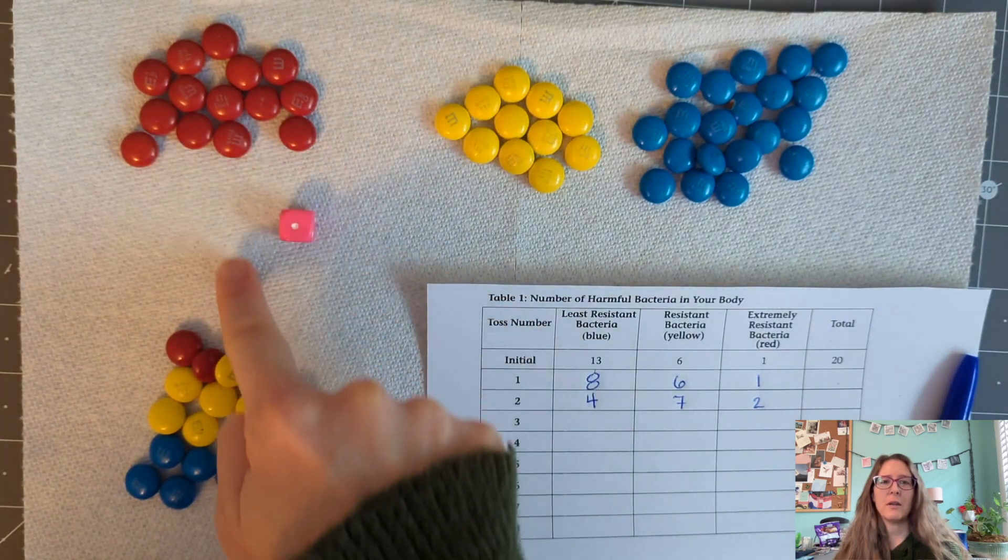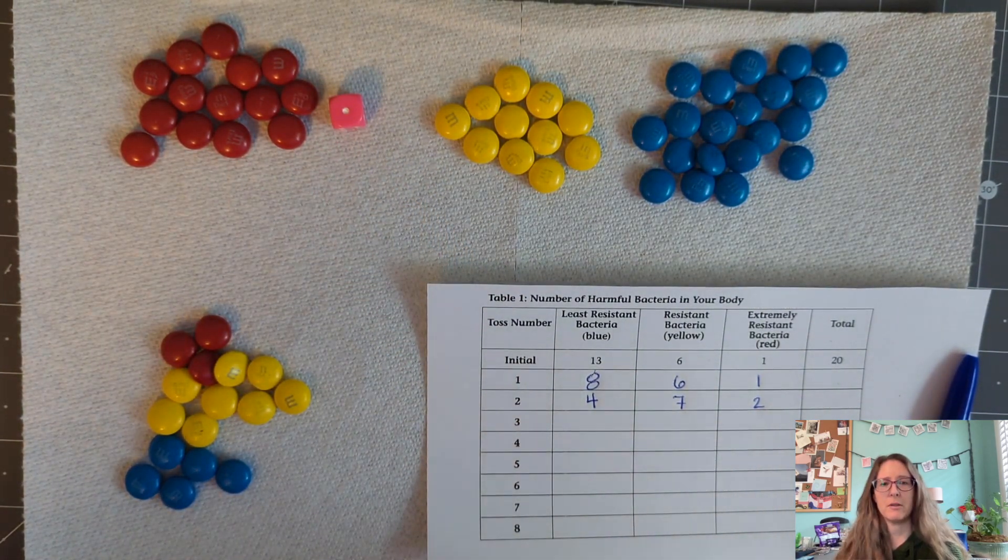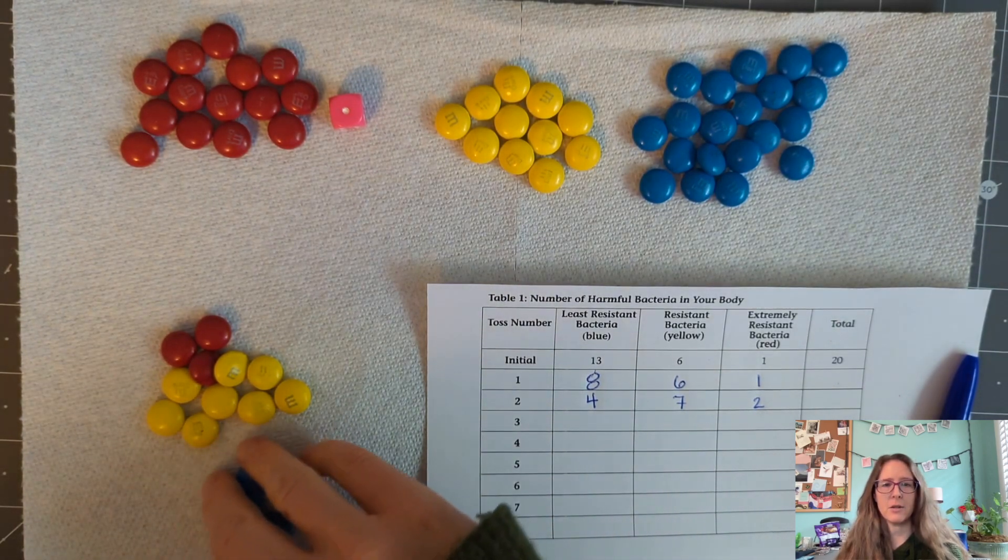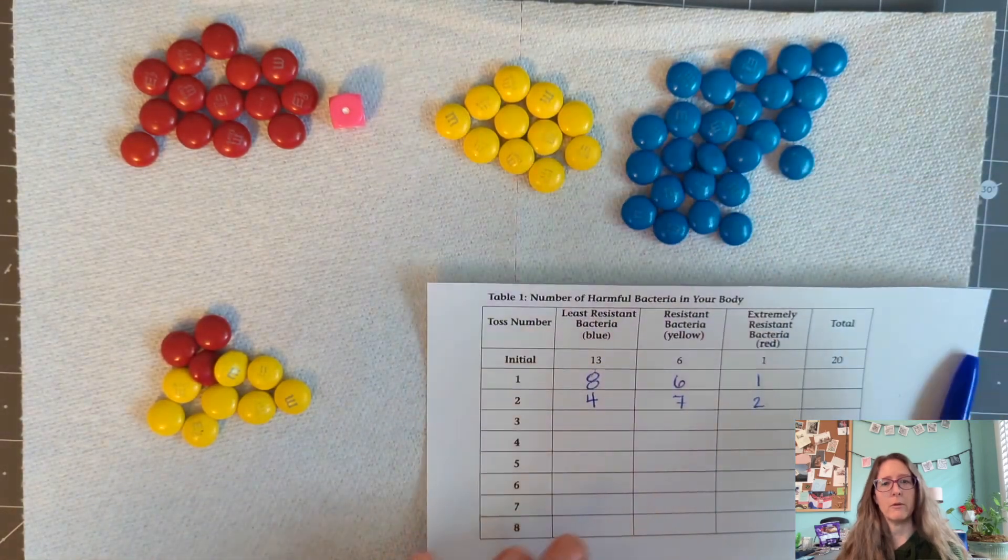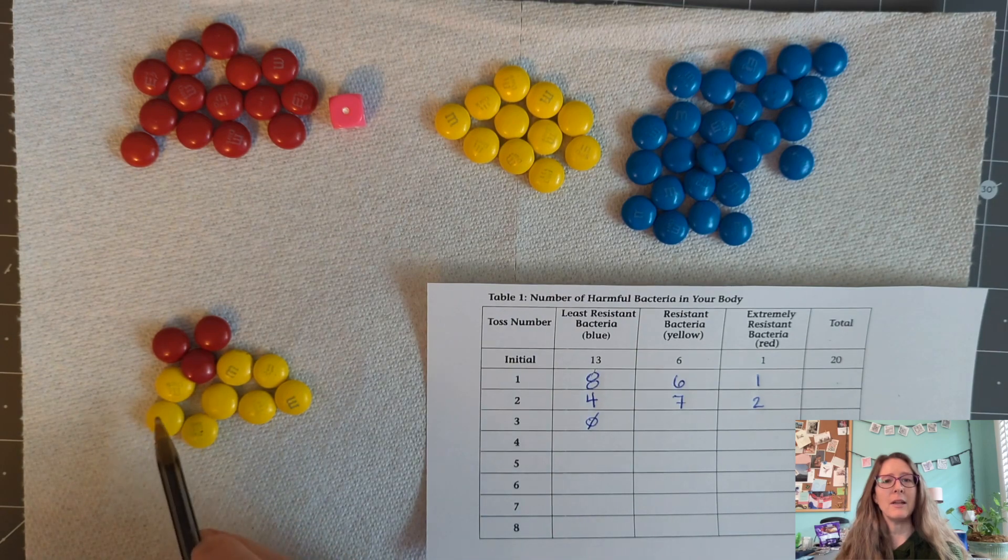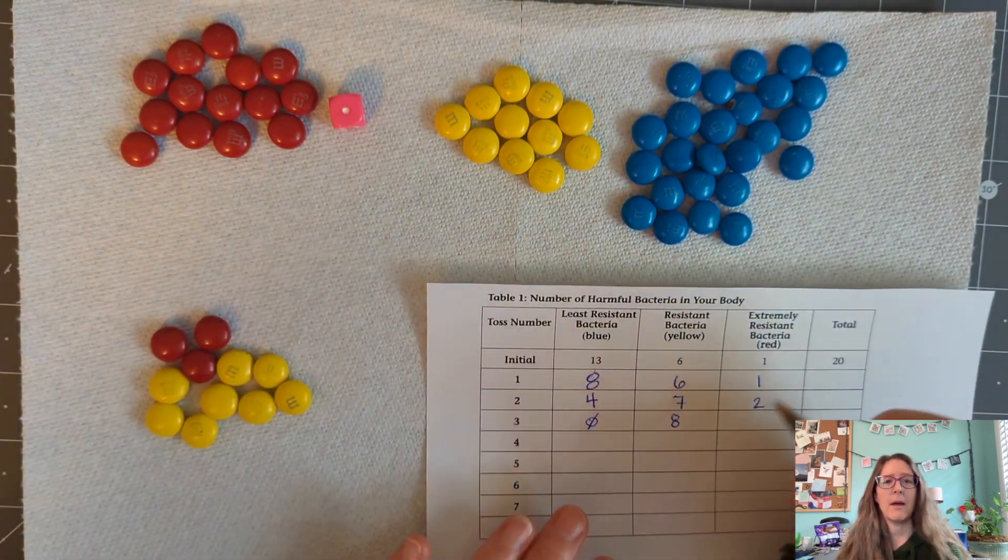Students need to add one token of each color they have left to represent those bacteria reproducing. So for example, if we have blue, yellow, and red tokens left, we would add one blue, one yellow, and one red token to our population. But if we have only yellow and red tokens left, then we would only add one yellow and one red.